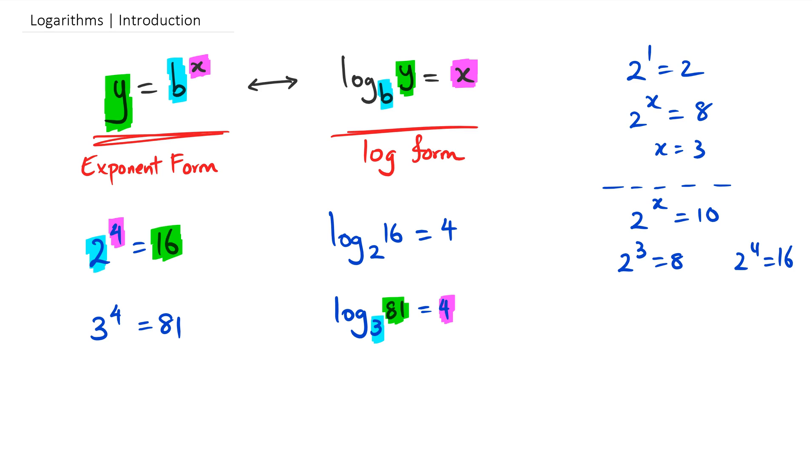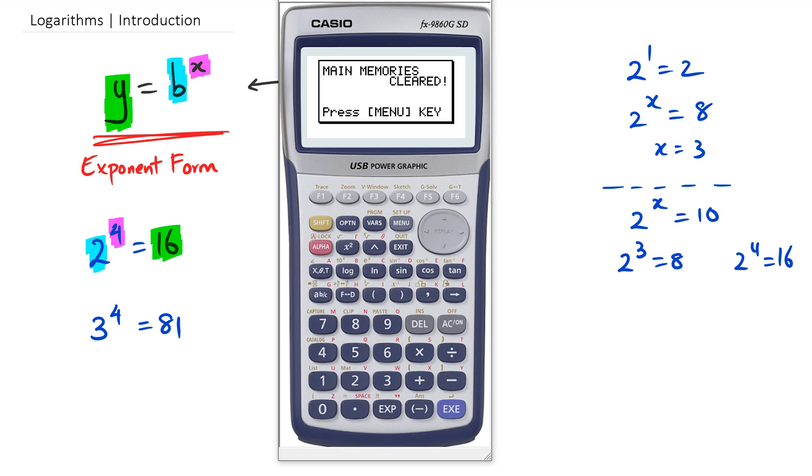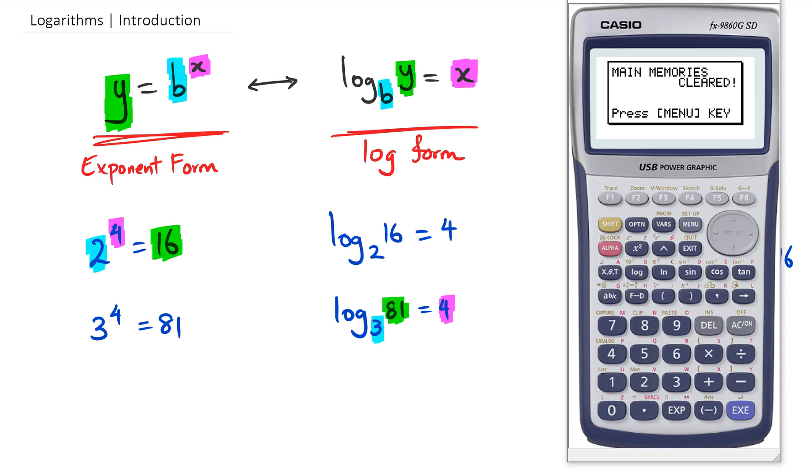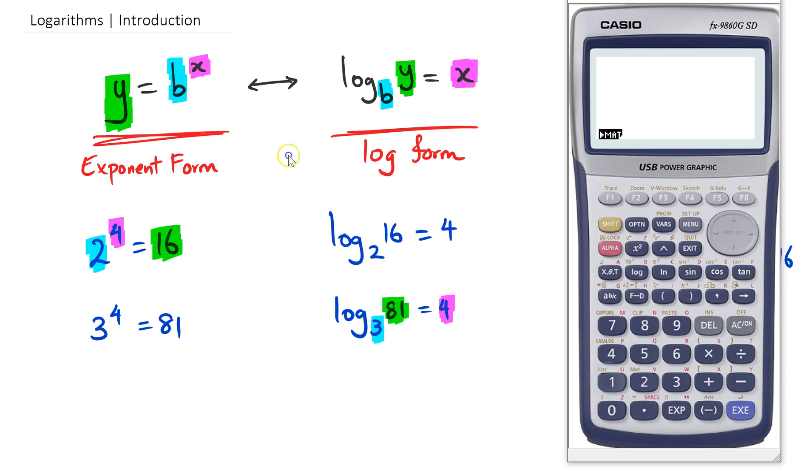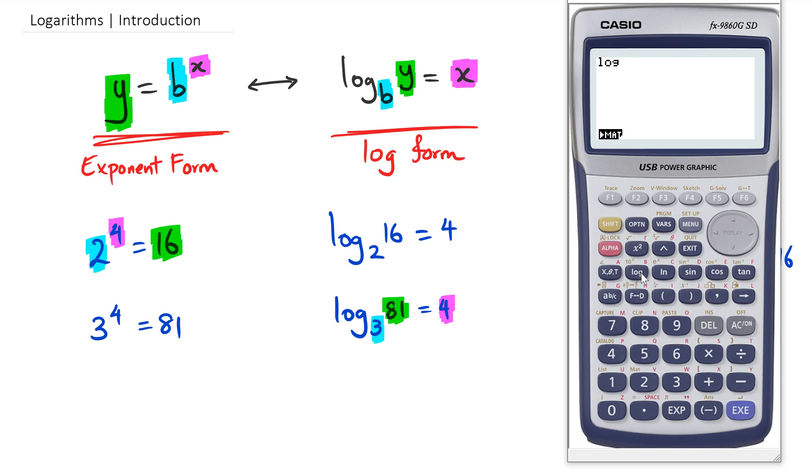In the calculator, you've actually got the log button right there. But if you look at it, it actually has a base 10. If you look in your calculator, it's actually 10 to the power of x. That means whenever we press log in the calculator, it's base 10.